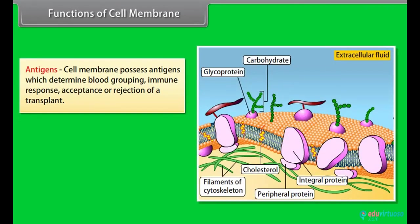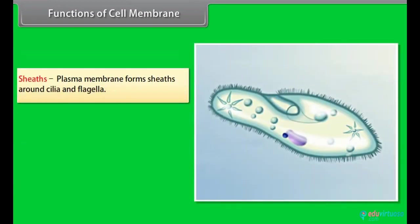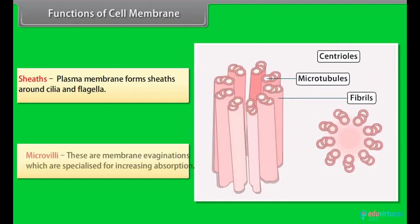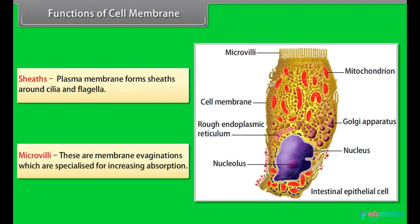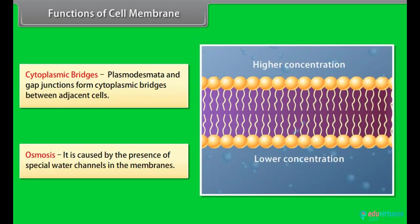Antigens - cell membrane possesses antigens which determine blood grouping, immune response, acceptance or rejection of a transplant. Cell junctions - they help in keeping animal cells together. Sheets - plasma membrane forms sheets around cilia and flagella. Microvilli - these are membrane evaginations which are specialized for increasing absorption. Cytoplasmic bridges - plasmodesmata and gap junctions form cytoplasmic bridges between adjacent cells. Osmosis - it is caused by the presence of special water channels in the membranes.